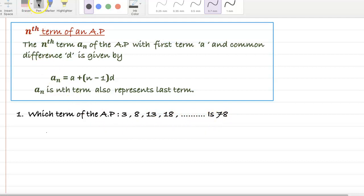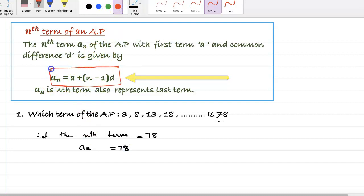So let us take the nth term. Let the nth term is 78, which means a_n is 78. We know the formula a_n equals a plus (n minus 1) into d. Here a is the first term and the common difference is d.